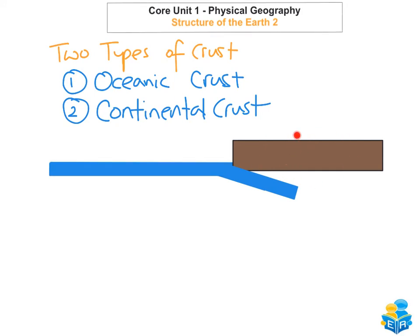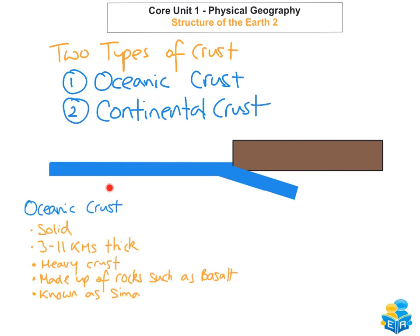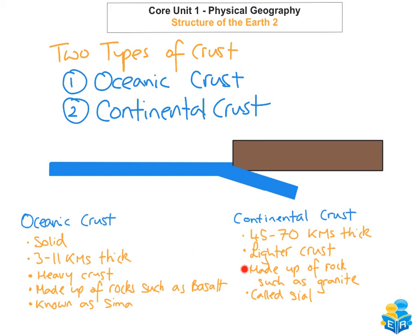The continental crust won't subduct beneath the oceanic crust even though it is much thicker. One thing to note about the continental crust is that its material is referred to as SIAL, because it's made out of two basic substances which are silica and aluminium. So I hope that clears up the difference between the oceanic and the continental crust, and you'll now be able to explain some of the differences between the two of them.